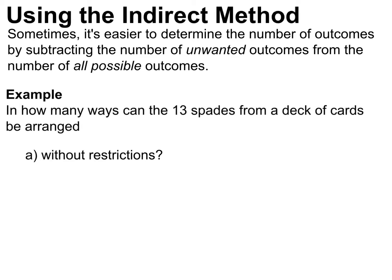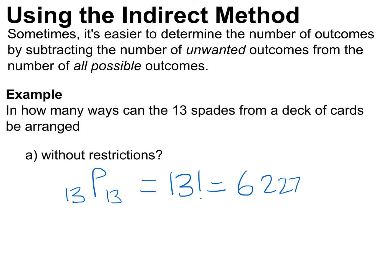There's also an indirect method: subtract the number of unwanted outcomes from the total possible outcomes. For example, in how many ways can the 13 spades from a deck be arranged without restrictions? We calculate 13P13, which is 13 factorial, equaling 6,227,020,800 total arrangements.